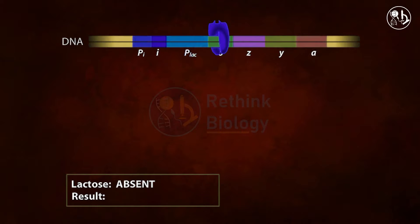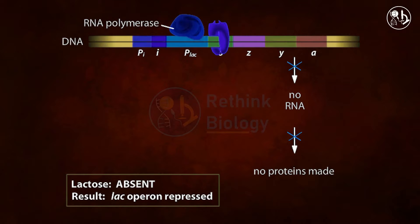Like a DNA roadblock, repressor binding to the operator stops RNA polymerase from progressing. The lac structural genes are therefore unable to be transcribed, and hence no proteins are produced.